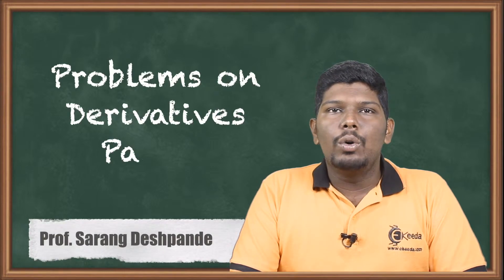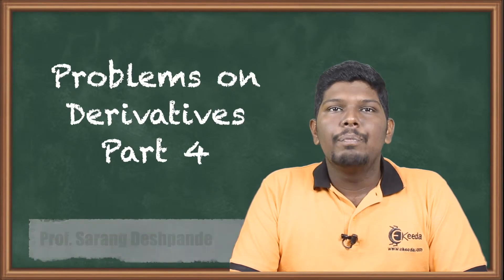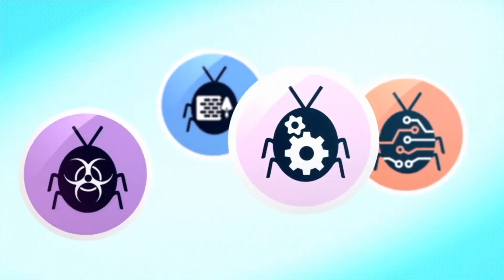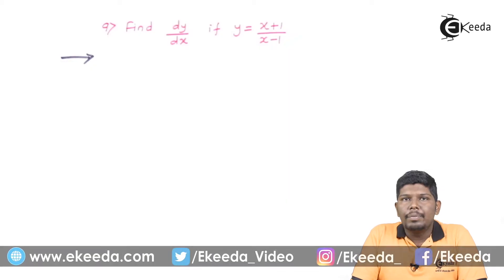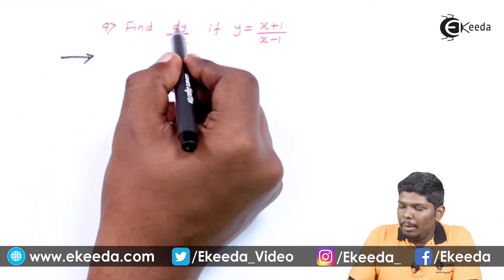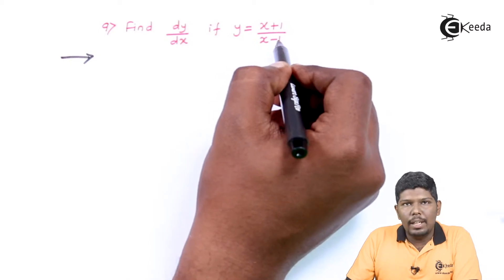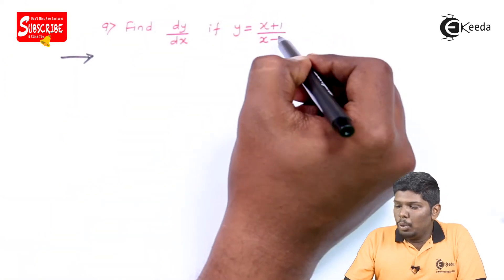Hello friends, in this video we are going to continue problems on derivatives. Let us start with problem number 9: find dy/dx if y is equal to (x + 1) upon (x - 1). This sum is of a new type — let us see how to solve it.